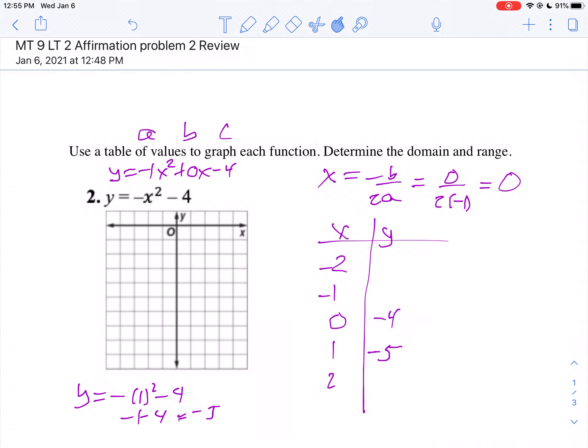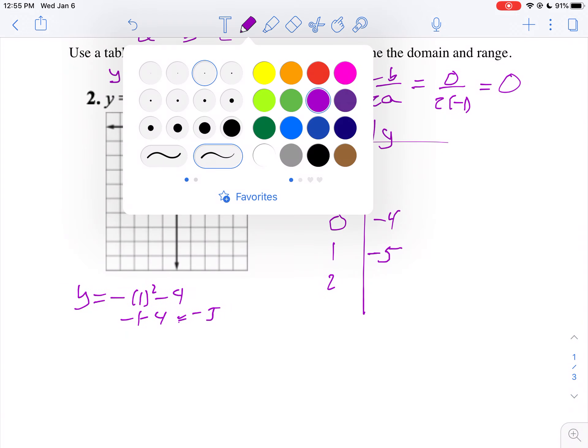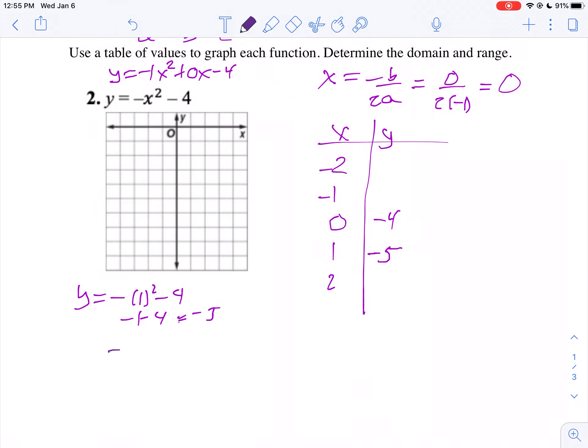But look what happens if I put a negative 1. Let me switch colors on you so you can see the difference here. So I go the opposite of negative 1 squared minus 4. Well, negative 1 squared is positive 1. So it's the opposite of 1 minus 4, which is negative 5. So in other words, these two are exactly the same.